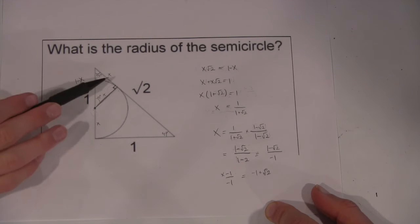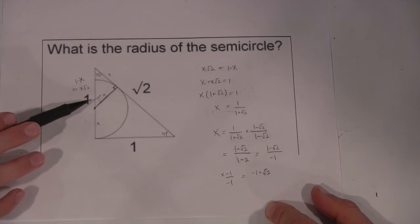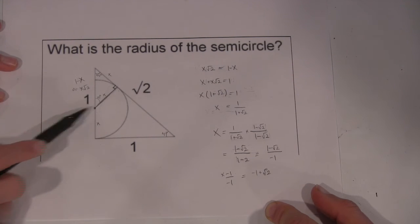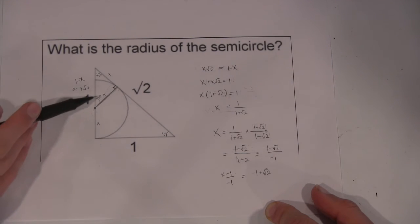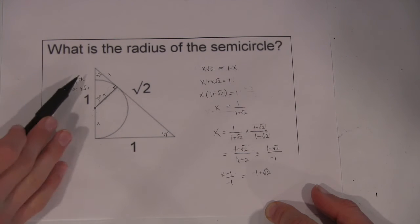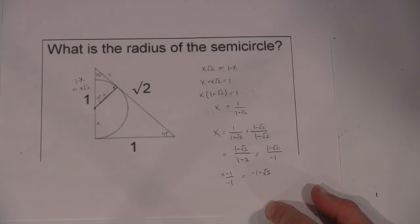So, since these sides are x, we can get two expressions for this side, this hypotenuse here. We can get x√2 from the Pythagorean theorem, or we can see that it's 1 minus this x here. So, it's either 1 minus x or x√2, and we can use this to solve for x.